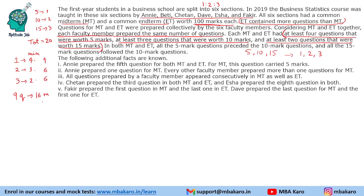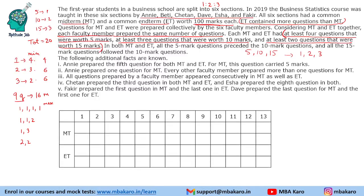We still need 4 more marks to reach the total of 20. We can add 4 more marks in various combinations: 1+1+1+1, or 1+1+2, or 1+3, or 2+2. So we already have 9 questions and can add up to 4 more, making the maximum 13. Therefore, each paper can have between 11 and 13 questions.